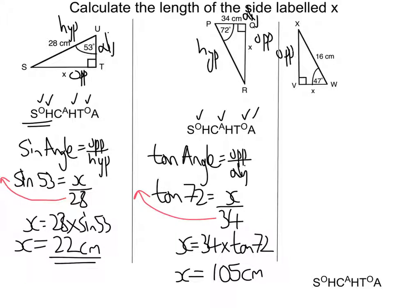Onto the last example. Again, first we need to label our sides, op, hype, and adjacent. Once we've done that, then we start ticking our SOHCAHTOA.